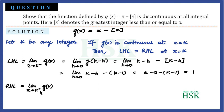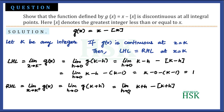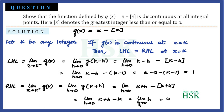The right-hand limit equals the limit as x tends to k⁺ of g(x), which equals the limit as h tends to 0 of g(k + h), which equals the limit as h tends to 0 of (k + h) minus the greatest integer of (k + h). If k = 3, then k + h = 3.something, so its greatest integer value is 3. Similarly, the greatest integer of (k + h) equals k. So this becomes the limit as h tends to 0 of h, which equals 0.